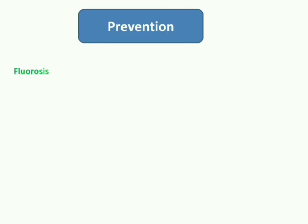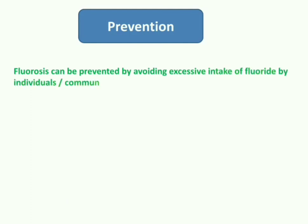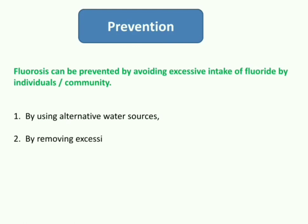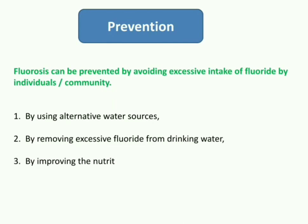What can you do to prevent fluorosis? Fluorosis can be prevented by avoiding excessive intake of fluoride. This can be done by using alternative water sources like water that is low in fluoride content, by removing excessive fluoride from drinking water, and by improving the nutritional status of the population.